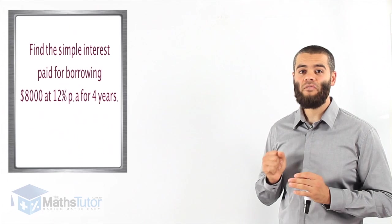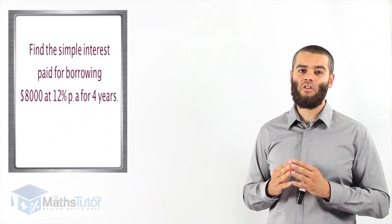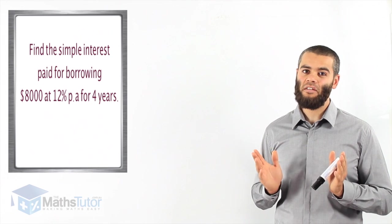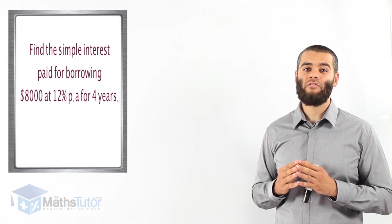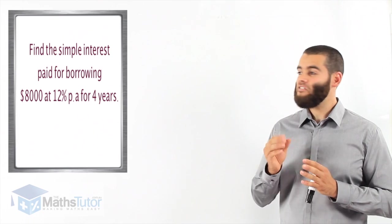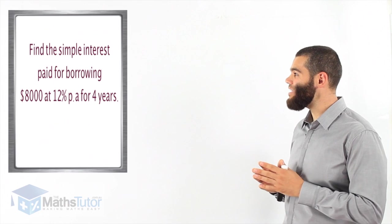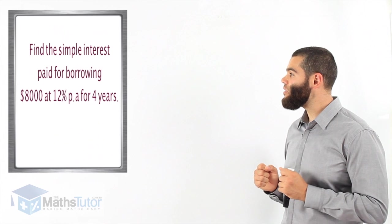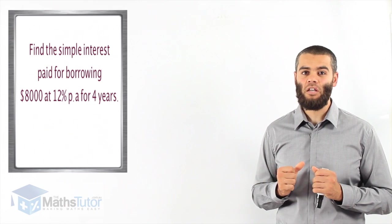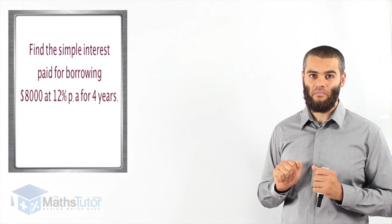So, here we have a person who's borrowing $8,000 from the bank. And we said, when you borrow from the bank or the financial institution, you're going to have to pay back what you borrow, plus interest on top. So, this person is borrowing $8,000. The bank is charging them 12% per annum per year for four years.